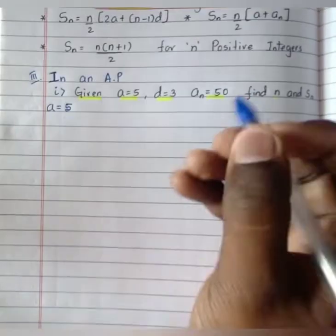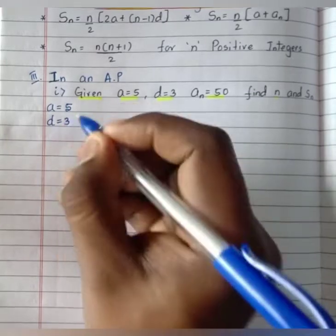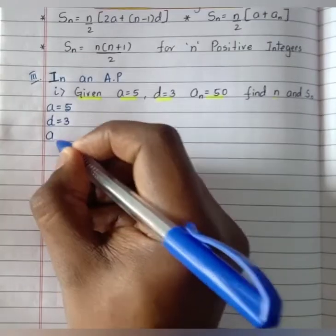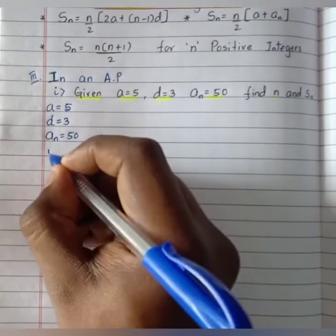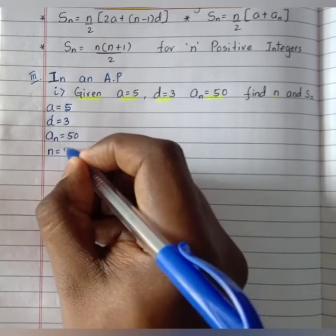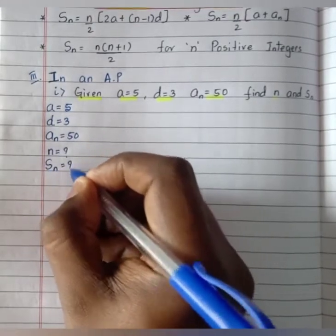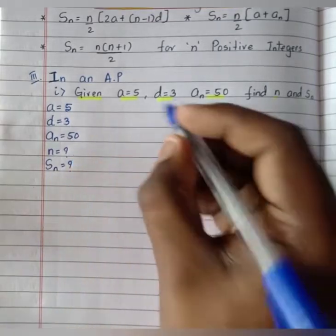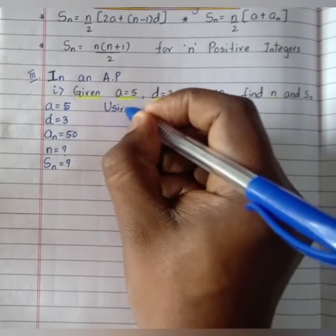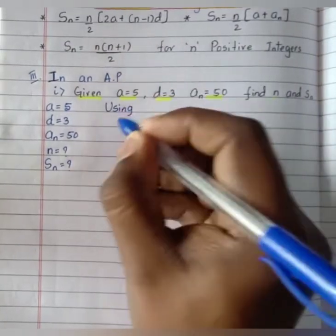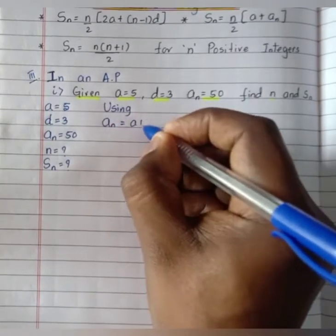Writing down the given data: a equals 5, d equals 3, an equals 50. We need to find n and Sn. Now by using the nth term formula, an equals a plus n minus 1 into d.